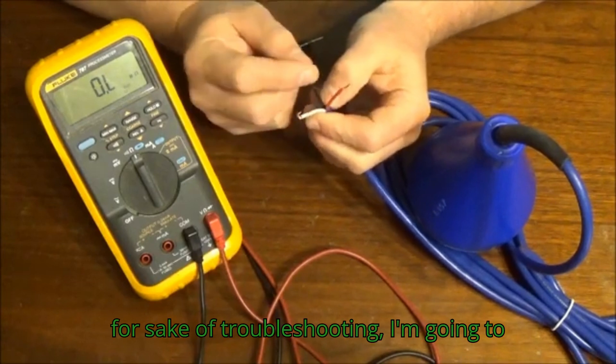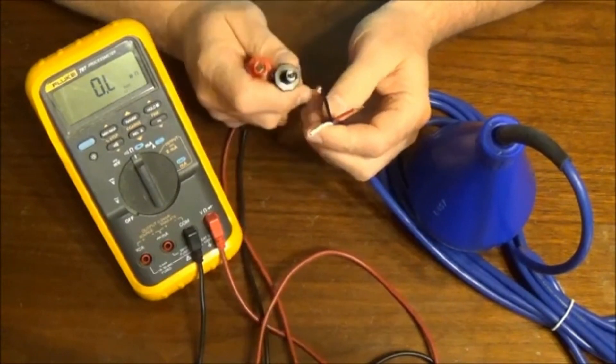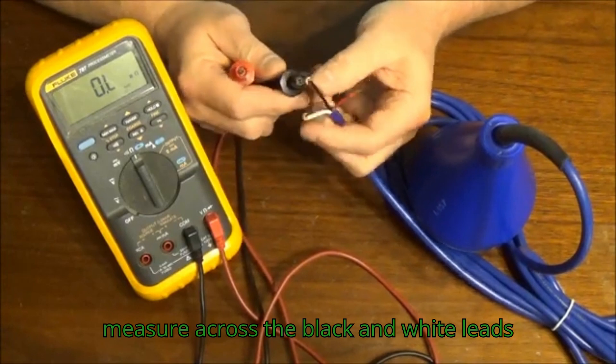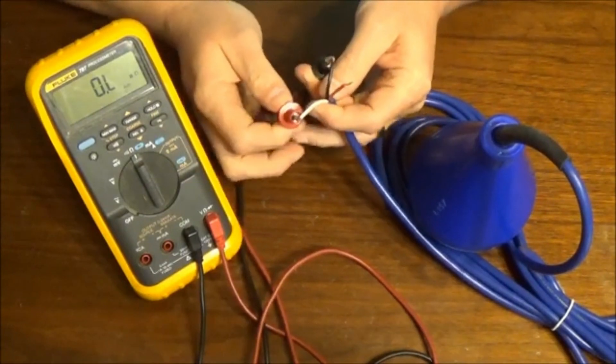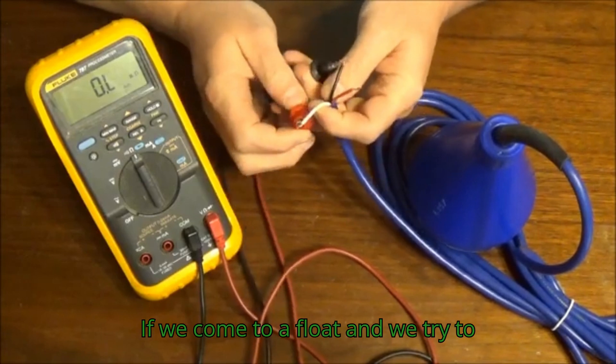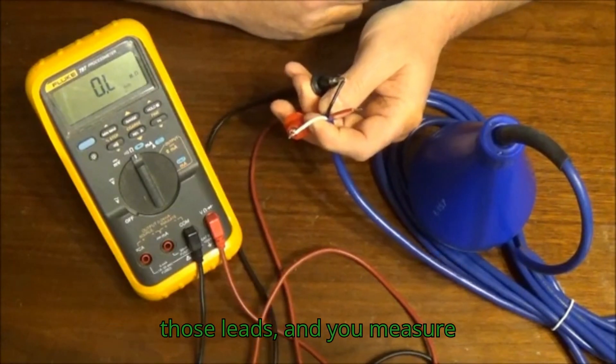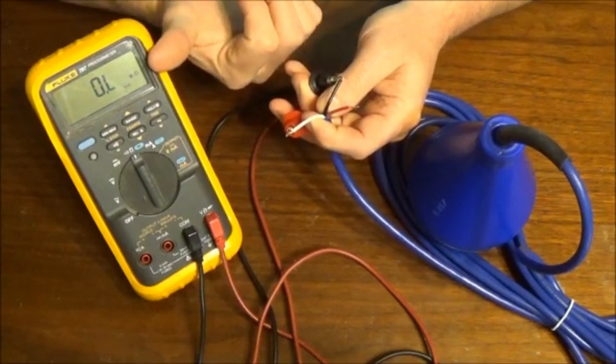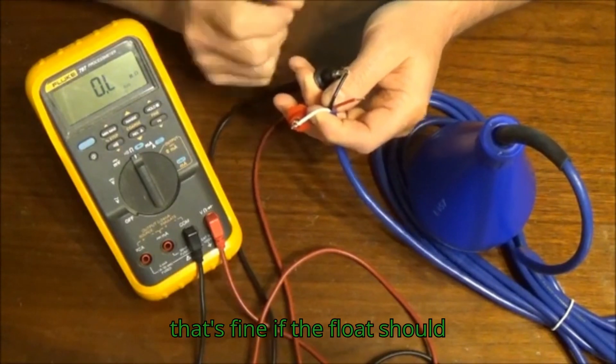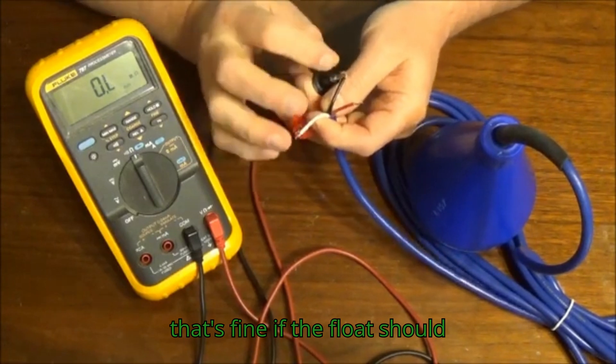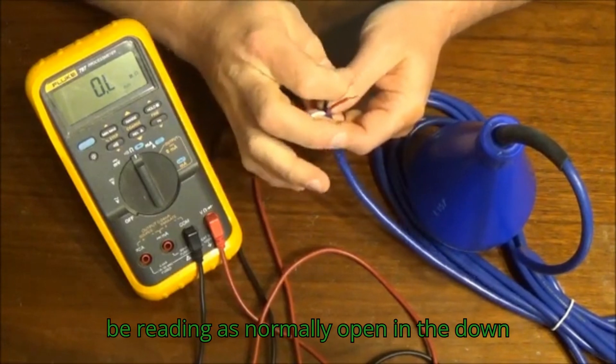For sake of troubleshooting, I'm going to measure across the black and white leads, implying that if you come to a float and try to troubleshoot it, and you measure across those leads and you measure overload, that's fine if the float should be reading as normally open in the down position.